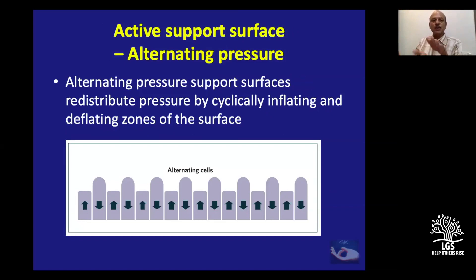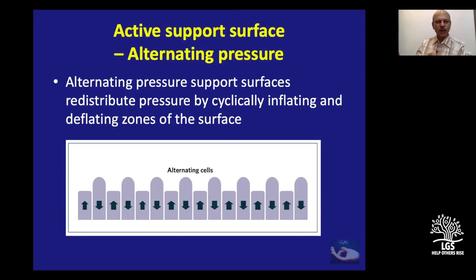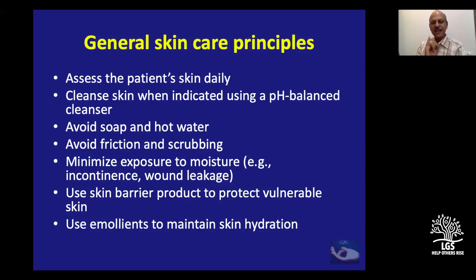Active support surfaces do something actively — they have alternating pressure cells with air moving between two columns. These surfaces redistribute pressure by cyclically inflating and deflating zones. The disadvantage is that it is sometimes irritating to the patient due to the constant movement and the sound caused by the electrical power mechanism. Now for skin care: assess the patient's skin daily. If too moist it's bad; if too dry it's also bad.